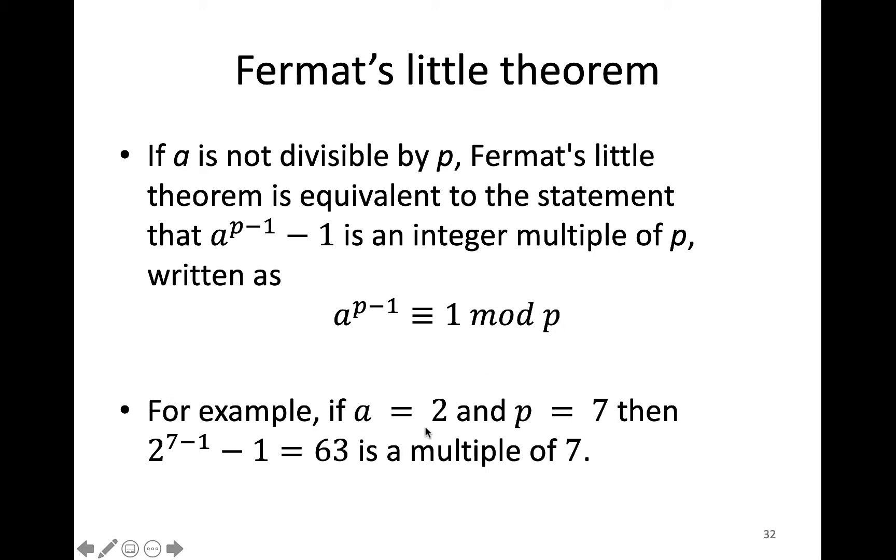For example, if a = 2 and p = 7, then 2^(7-1) - 1 = 2^6 - 1 = 64 - 1 = 63 is a multiple of 7.